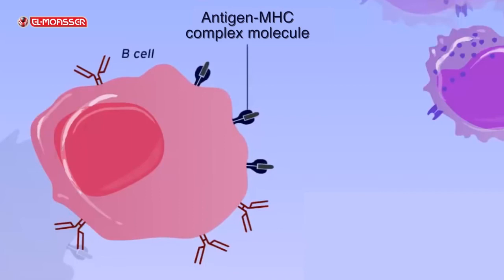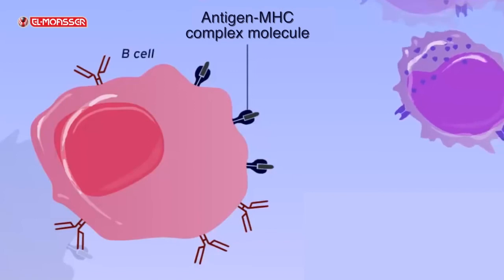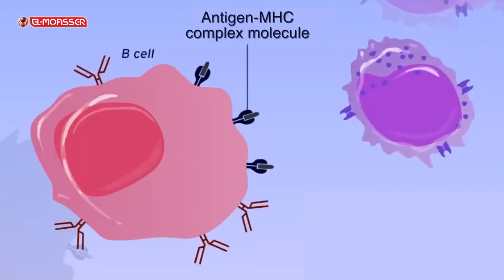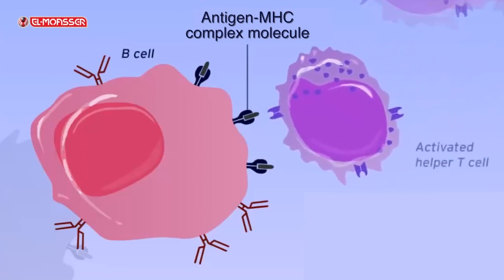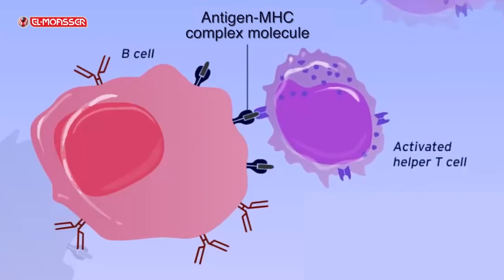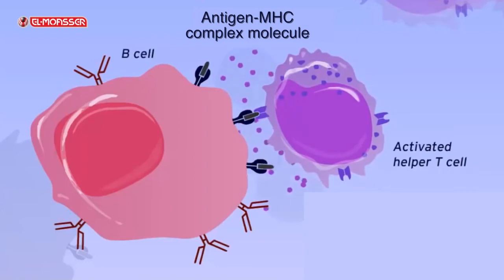The MHC protein binds with the antigens of the microbe, forming an antigen-MHC complex that is displayed on the surface of B cells. The activated helper T cells then recognize the B cells carrying the antigen-MHC complex on their surface and bind to them.